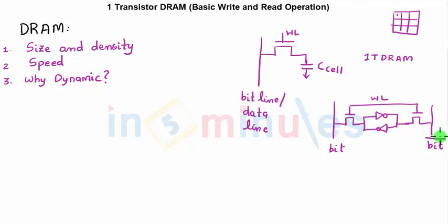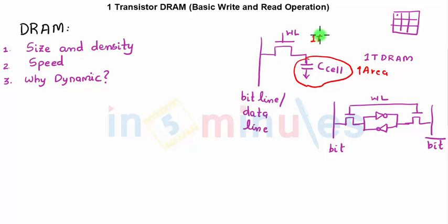However, if you look at the circuit of one transistor DRAM properly, you see that we have a capacitor, and the working principle — which we'll get into as we move ahead — is the charge stored across this capacitor. Now, capacitors fabricated on an integrated circuit occupy a lot of area, so though it is a one transistor DRAM, the capacitor means it might end up taking significant area.